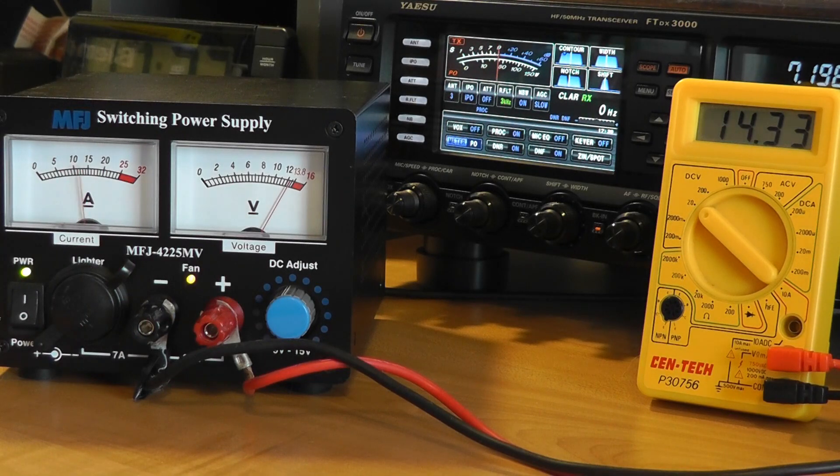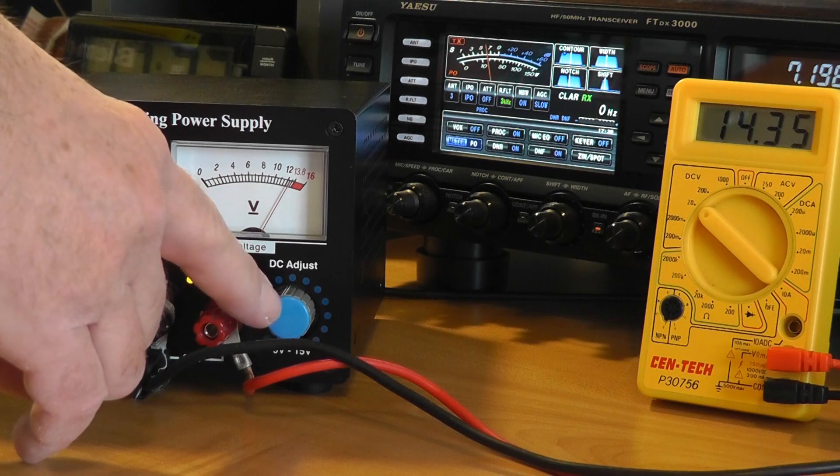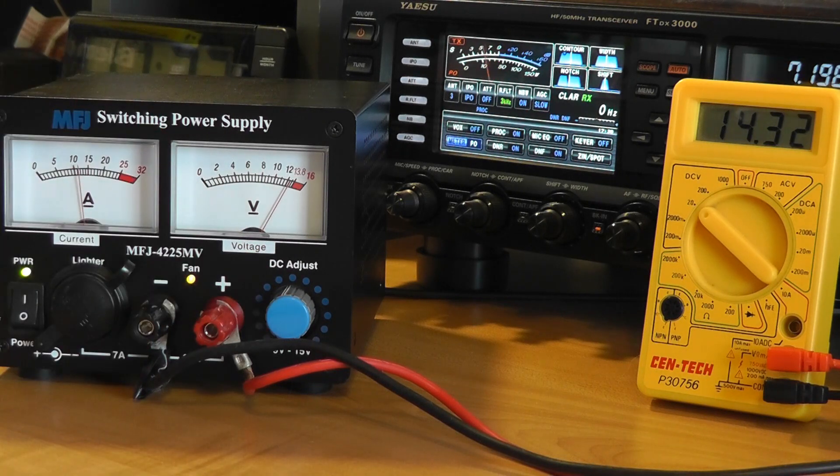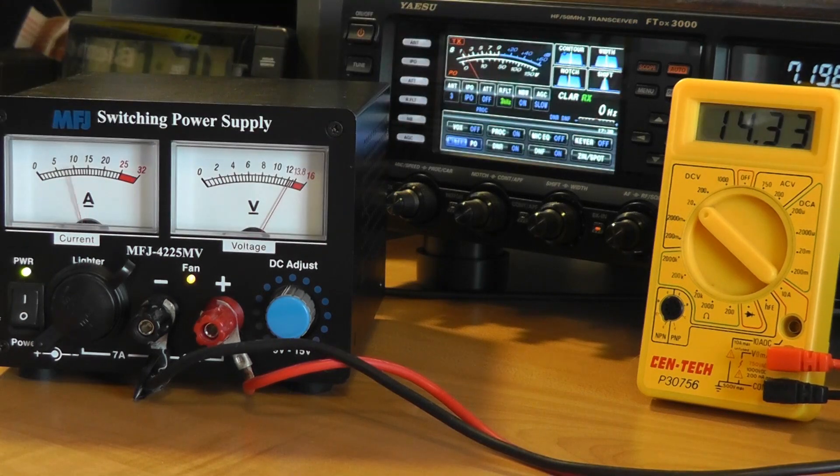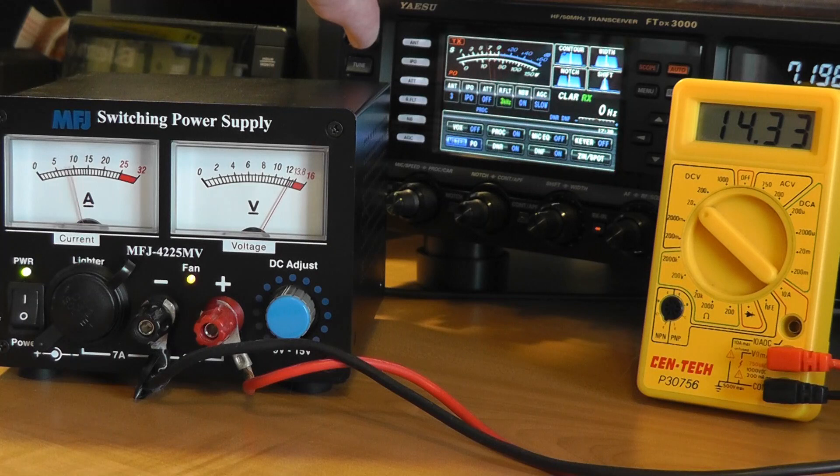I might note here that I don't see the reason for the variable voltage feature some commercial supplies have. The radios always want around 13.8 volts, and having an extra knob that varies the voltage doesn't really add any value, but it does add expense. By the way, always turn off the radio before turning off the power supply.